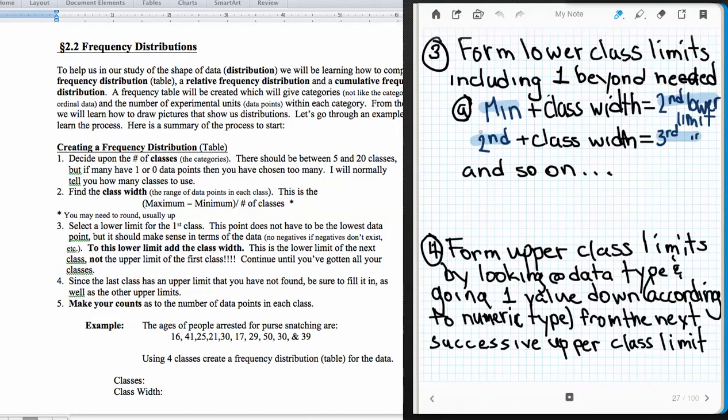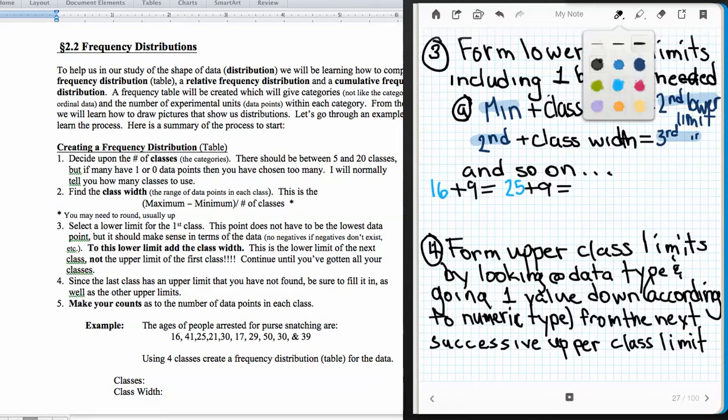Now, what do we do with the class width? Well, then we're going to use the class width to form the lower class limits and include 1 beyond what we need. So what we do is we take the minimum value. So we're going to take 16. And we're going to add the class width, and that's going to give us the second limit here. So our class width is 9. So we have plus 9. So 16 plus 9. And 16 plus 9 is going to give us our second lower limit. So our second lower limit is 25. And then again, we'll add that lower class width, plus 9. And that's going to give us our third lower class limit. And that will be 34. And now we're going to add the class width again. And that's plus 9. And that's going to give us our fourth lower class limit. That will be 43.